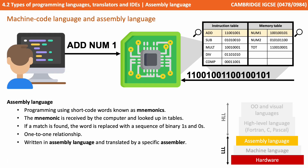With assembly languages, we program using short code words known as mnemonics. These mnemonics are received by the computer and looked up in tables. If a match is found, the word is replaced with the appropriate sequence of binary ones and zeros. This is therefore a one-to-one relationship.